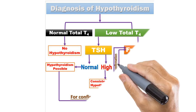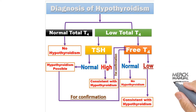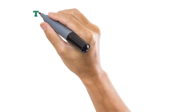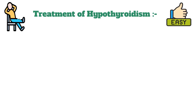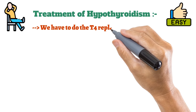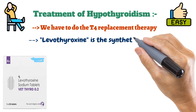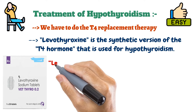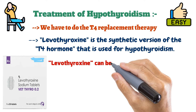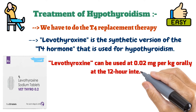A chart referencing Merck's Manual has been prepared to summarize the hormone story. For treatment, T4 replacement therapy is used. Levothyroxine is the synthetic version of the T4 hormone used for hypothyroidism, administered at 0.02 mg/kg orally at 12-hour intervals.